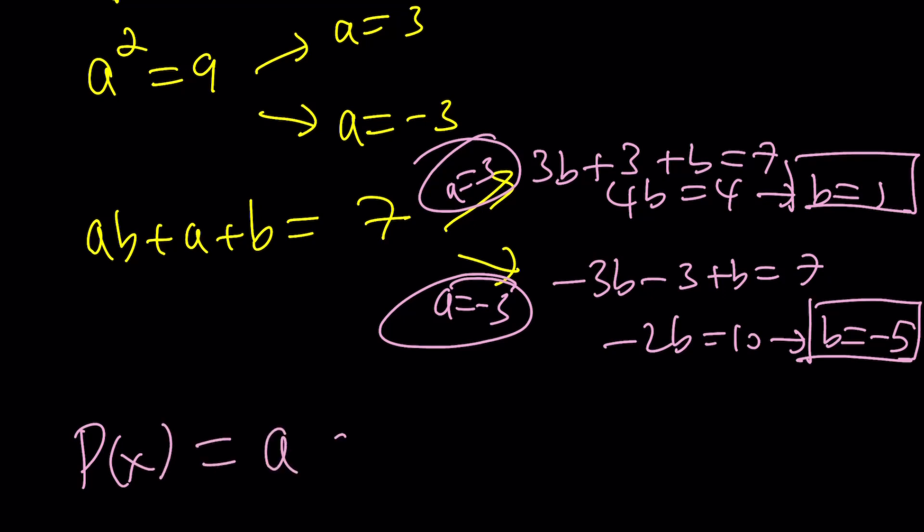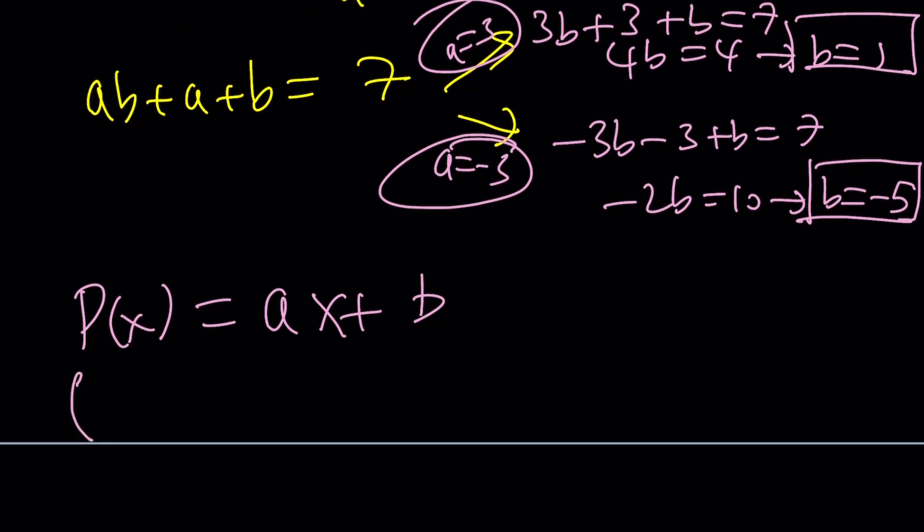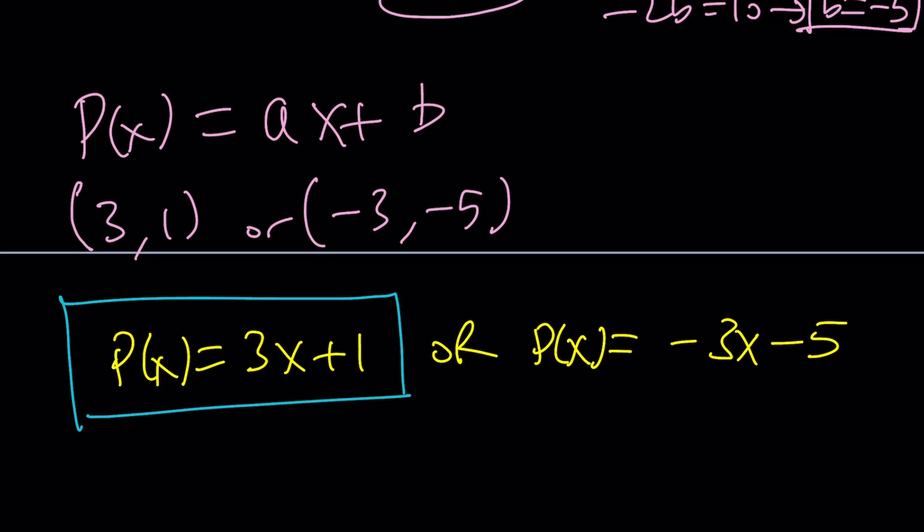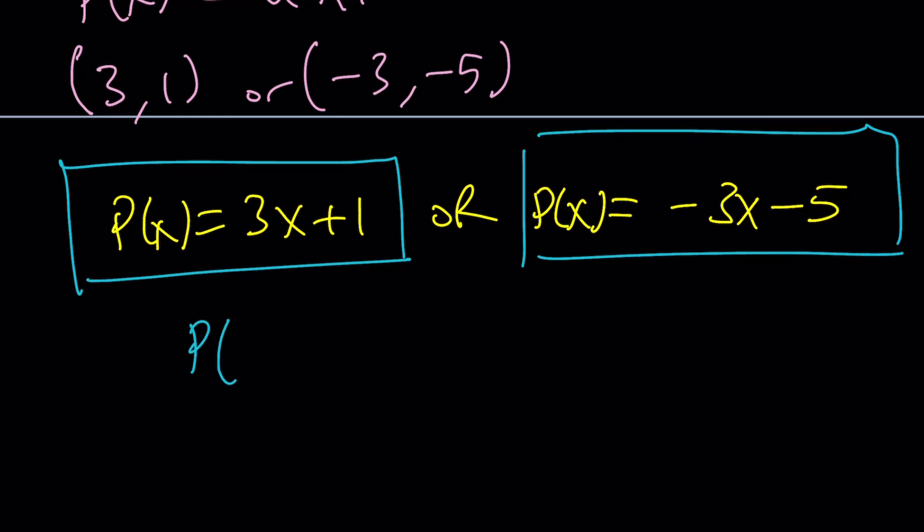The conclusion is the following. Since P(x) was able to be written as ax + b, and for a = 3, I can probably write those as ordered pairs. If a is 3, then b is 1, or if a is -3, then b is -5. This gives us two solutions for P(x). P(x) is either 3x + 1, or P(x) = -3x - 5. And if you plug these in, you're going to realize that both of them actually satisfy the original equation, which was P(P(x)+1) = 9x + 7.